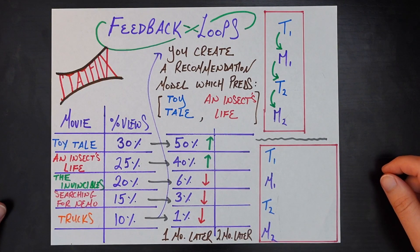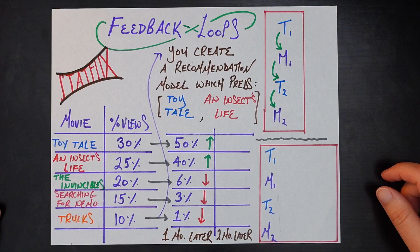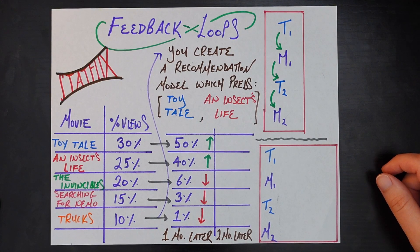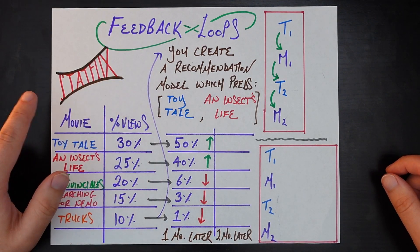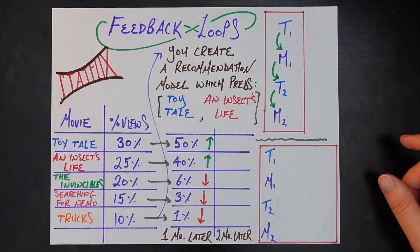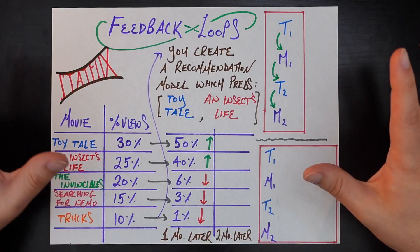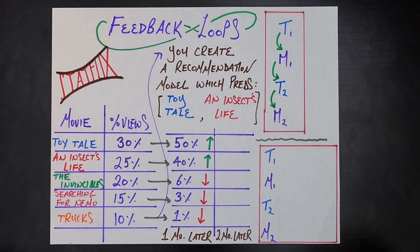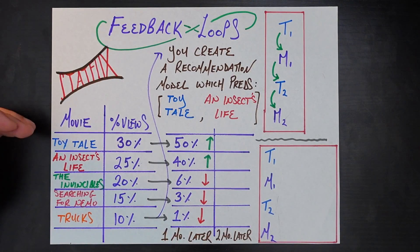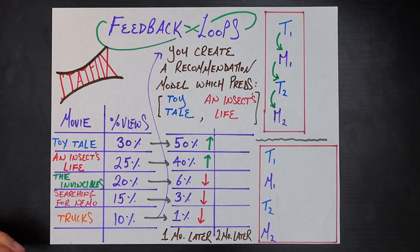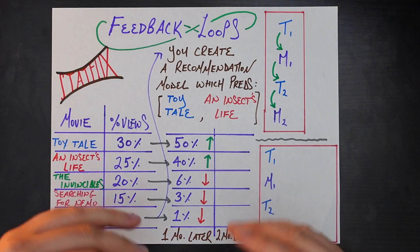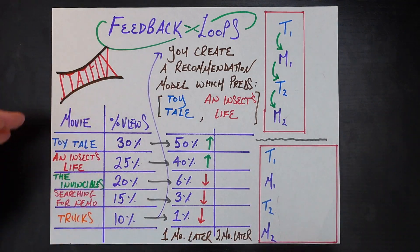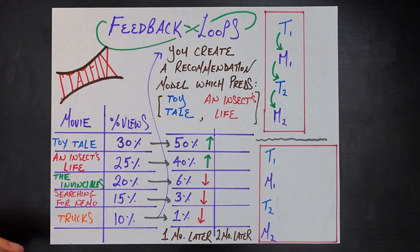We're going to assume, as we did in some previous videos, that you are the data scientist at a streaming company called Statflix that hosts a bunch of movies online. Now let's say you just have five movies — it's a relatively small company — and this is what percent of all views go to each of these five different movies.